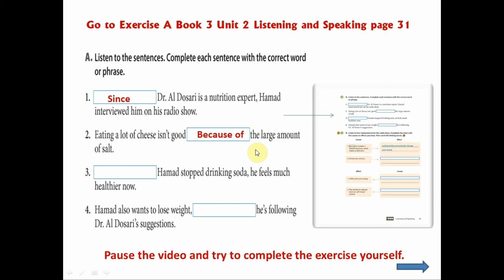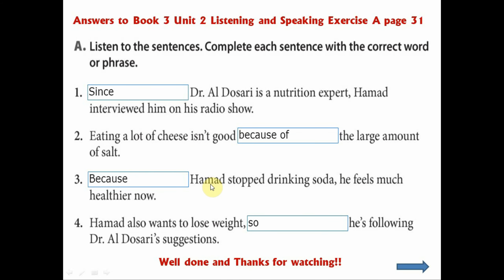Try and do the following two remaining sentences. Complete them with linking words from our exercise. Pause the video now and try to complete the exercise. Okay, great. Let's have a look at those answers. Number three was because — I hope you got this one right. Because Hamad stopped drinking soda, he feels much healthier now. We use because to emphasize the reason. Hamad also wants to lose weight, so he's following Dr. Al-Dusari's suggestions. Remember, in our examples so is used between the clauses and after a comma, so this one we need to use so.